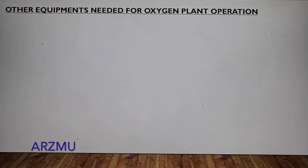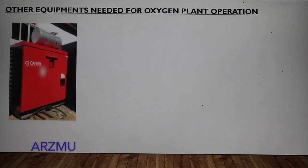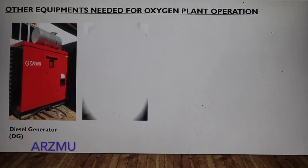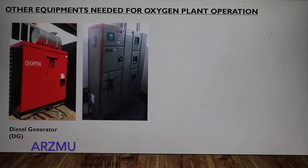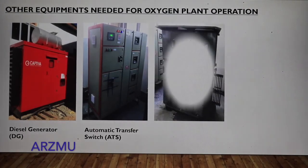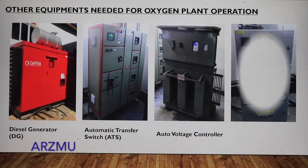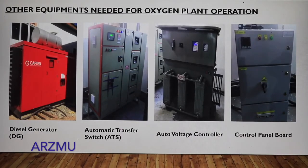The other equipment necessary for the operation of an oxygen plant are: a diesel generator (DG) for backup source of electricity, an automatic transfer switch (ATS) used to run the DG in case of power failure, an auto voltage controller for the oxygen plant, and a control panel board as a safety measure.